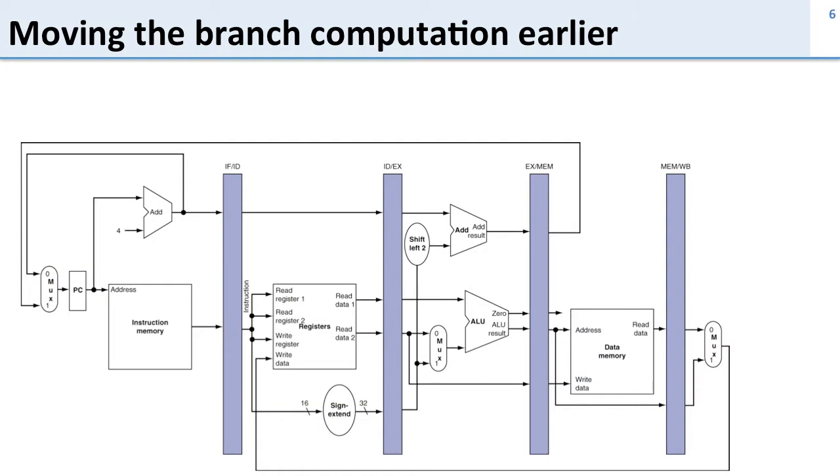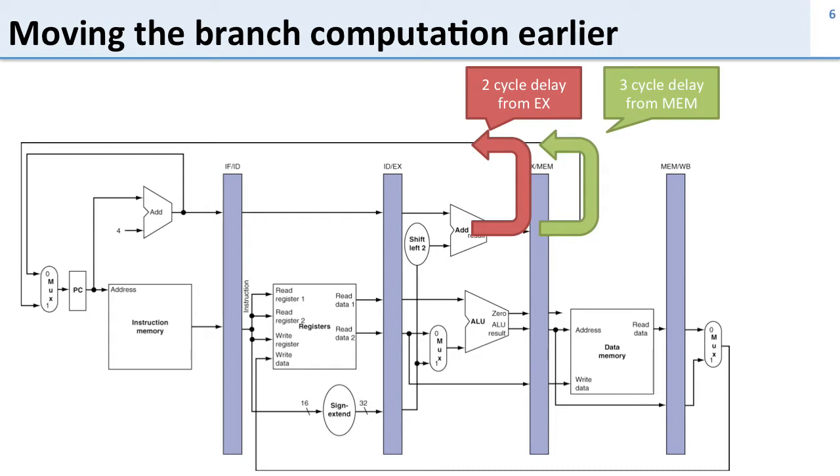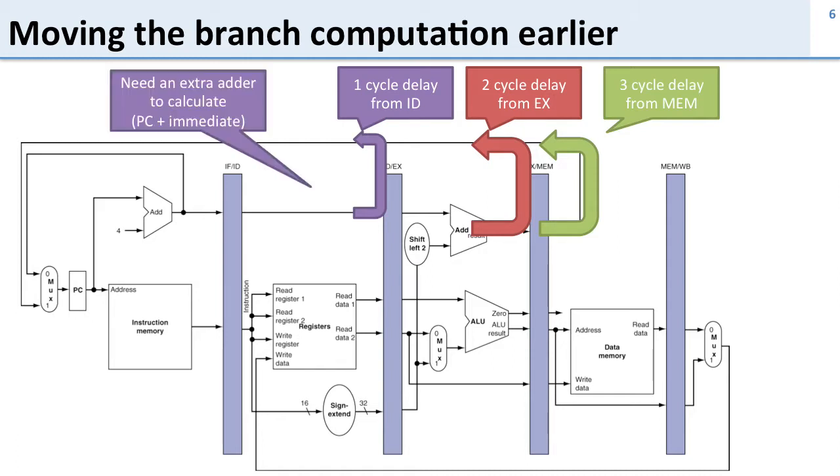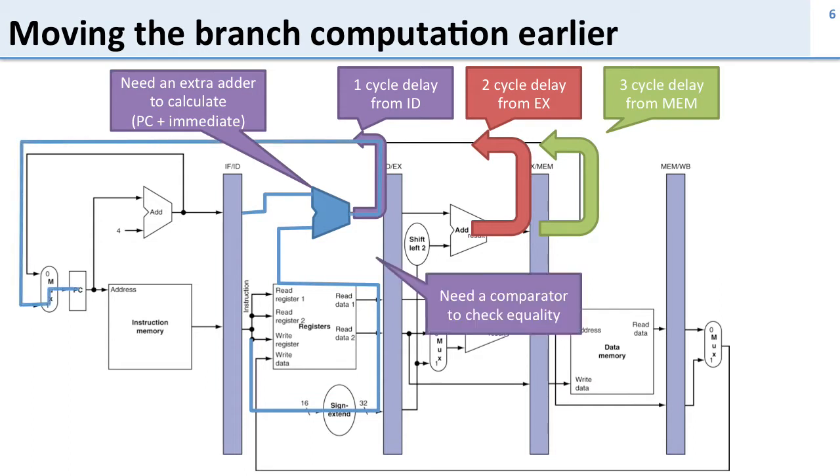We talked about ways to avoid this, and the first one was let's move the branch computation earlier. When we had the branch in the MEM stage, it took us three cycles. If we moved it forward one to the EX stage, we could do it in two cycles, and if we move it even further into the instruction decode, we could do it in one cycle. We talked about how to do this - we need to put in some extra hardware. We need an extra adder to calculate the new address and an extra comparator to check if the registers are equal to see if we should do the branch.